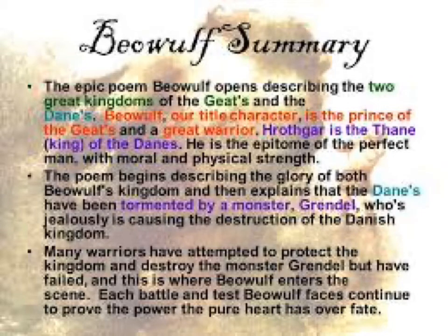The story is set in Scandinavia in the 6th century. Beowulf, a hero of the Geats, comes to the aid of Hrothgar, the king of the Danes, whose mead-hall Heorot has been under attack by a monster known as Grendel. After Beowulf slays him, Grendel's mother attacks the hall and in the end is also defeated. Victorious, Beowulf goes home to Geatland and becomes king of the Geats. Fifty years later, Beowulf defeats a dragon but is mortally wounded in the battle. After his death, his attendants cremate his body and erect a tower on a headland in his memory.